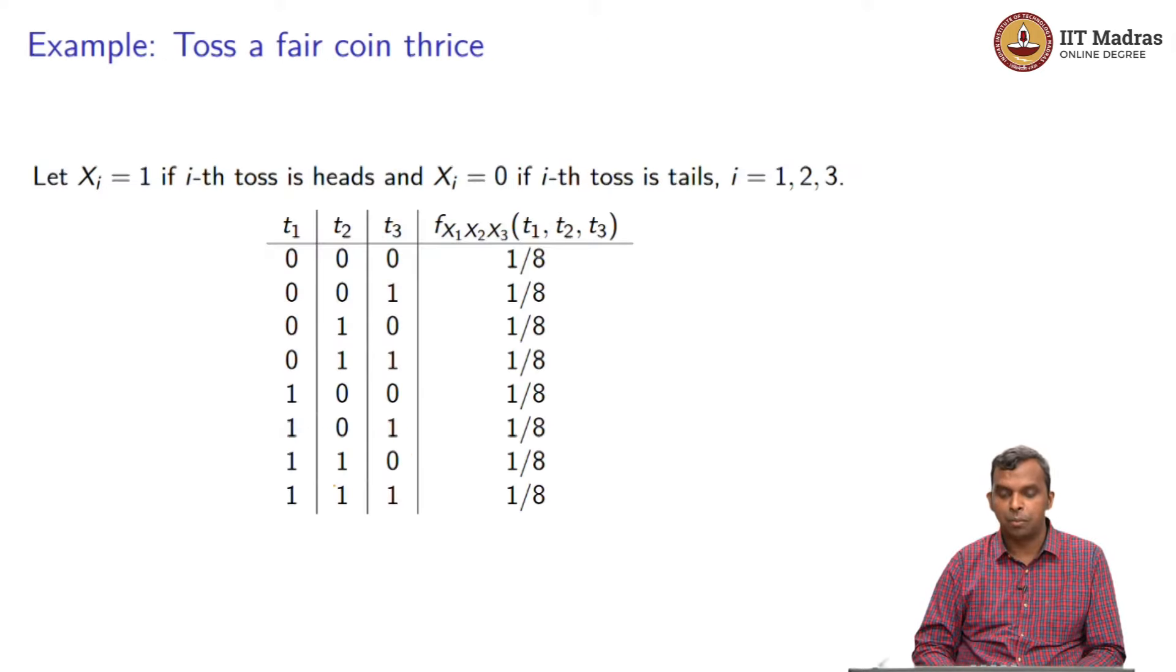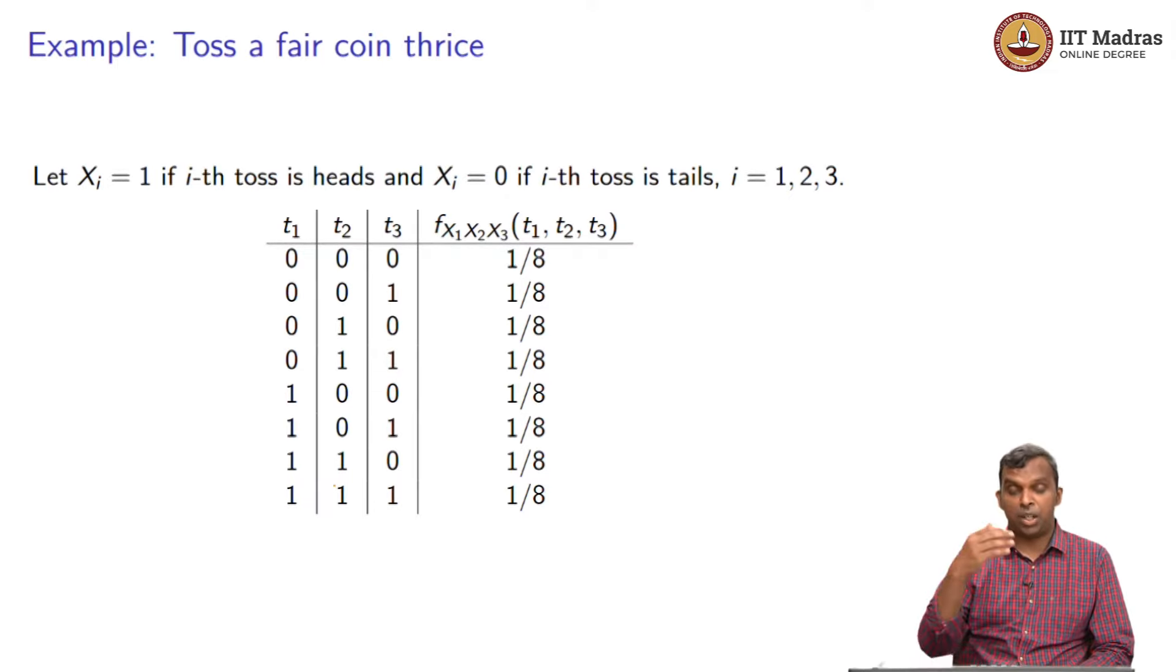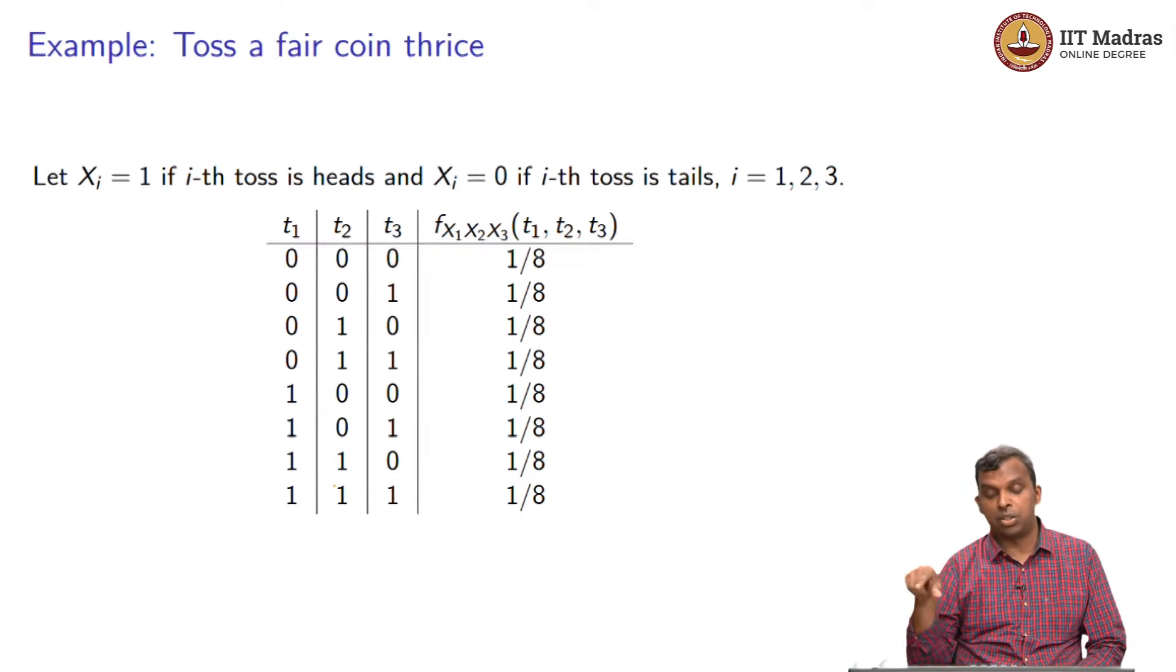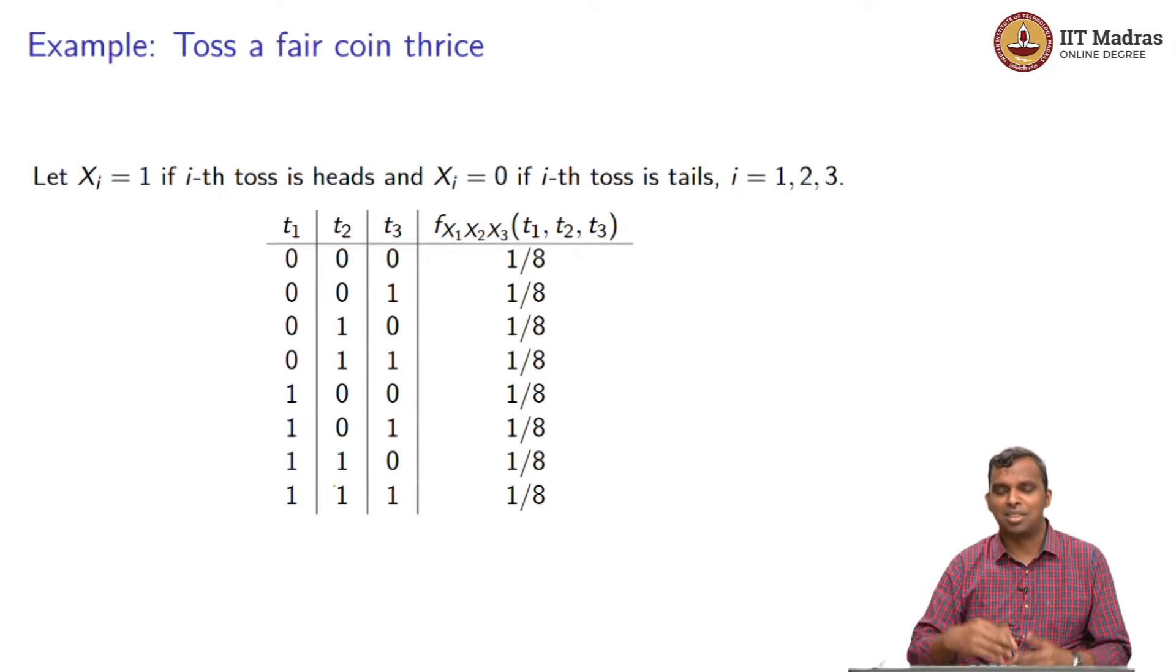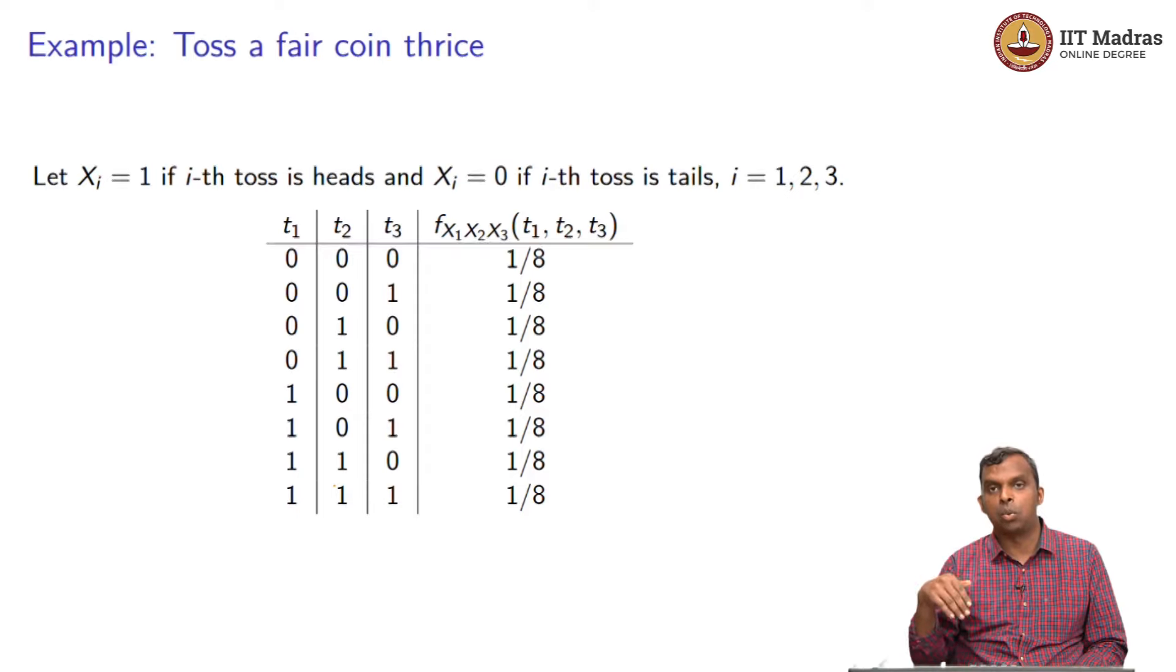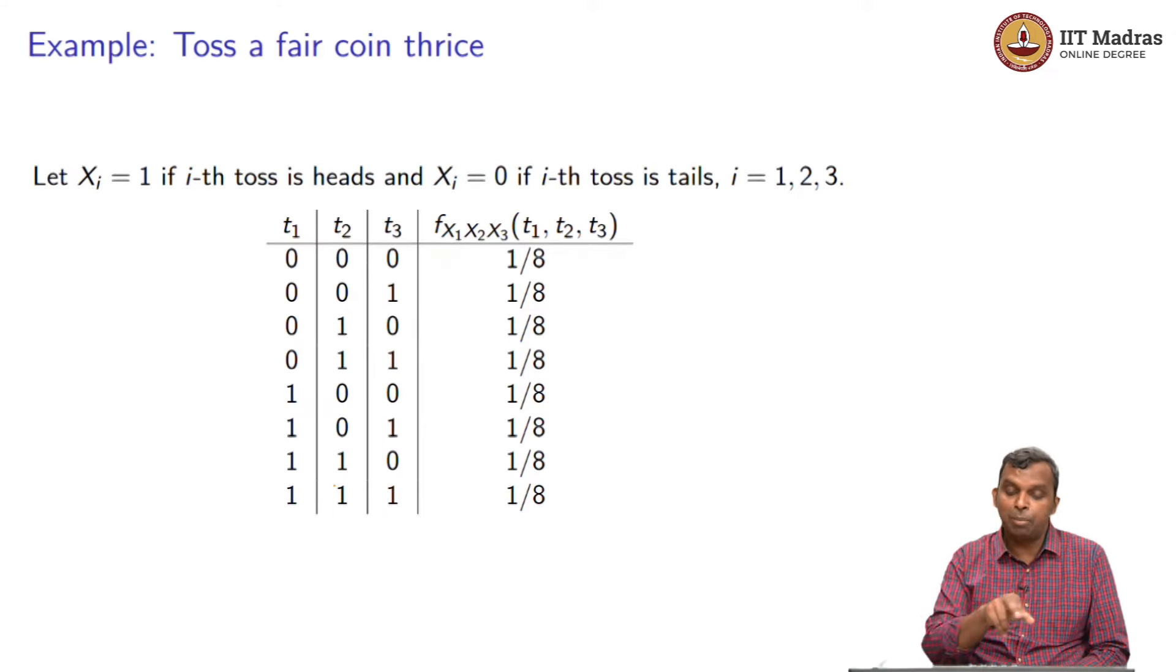Let us see a few examples and make sure we understand it. Let us go to the example of the fair coin toss. Earlier the coin was tossed twice, now we are going to toss it three times. When you toss it three times, you naturally define three random variables X1, X2, X3 and here this is small enough that you can write down a table. If you write down a table of t1, t2, t3, they could take values 0 0 0, 0 0 1, 0 1 0, 0 1 1, 1 0 0, 1 0 1, 1 1 0, 1 1 1, eight possible values.